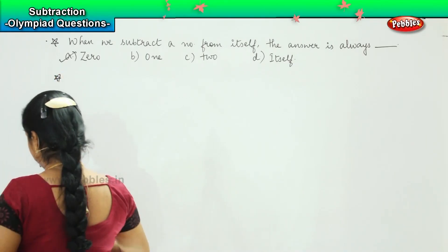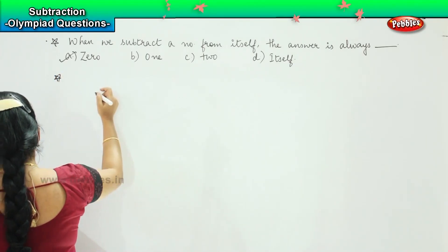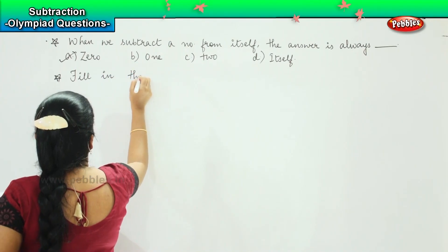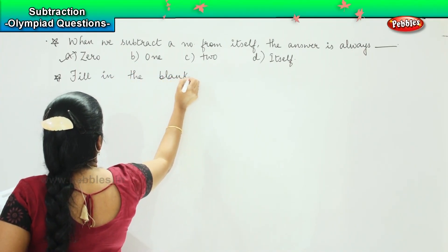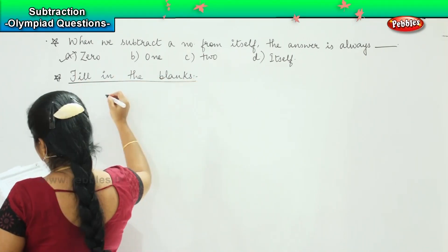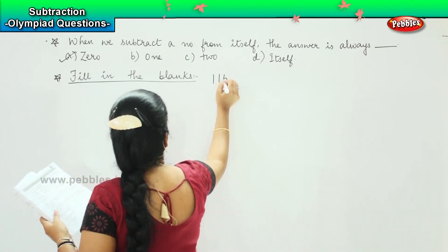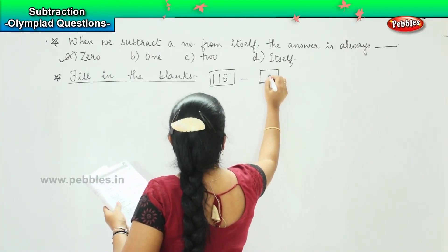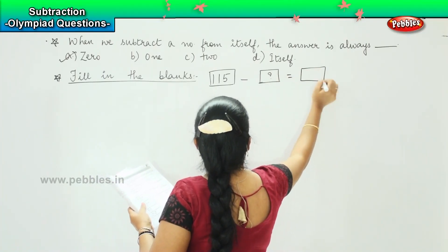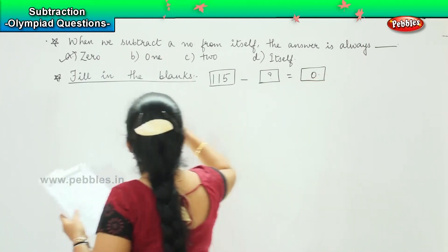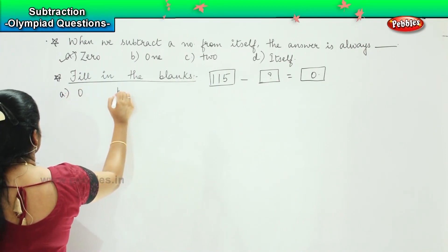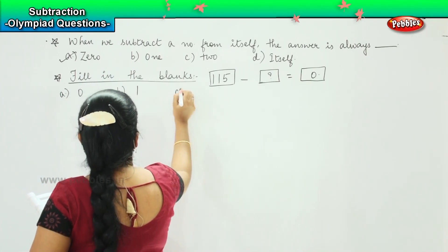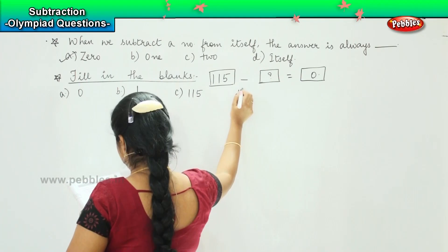Ok, here is your next one. The question says fill in the blanks. The question is 115 minus something equals zero. And your options are: a) zero, b) one, c) 115, and d) 100.